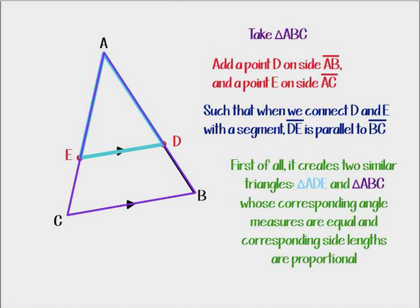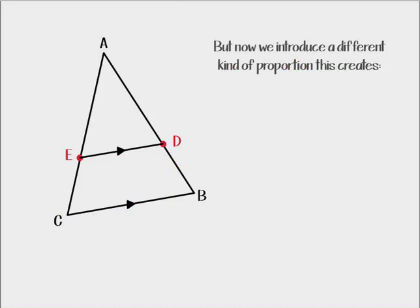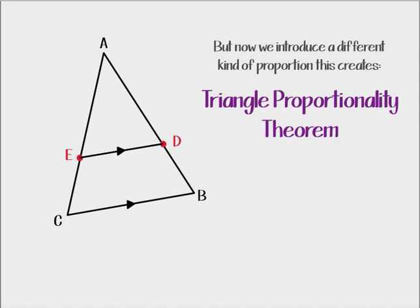That's kind of the background of what's happening with us here, but today we're going to set up a different kind of proportion that this also creates, and this is what the triangle proportionality theorem is all about. We're going to take those two smaller sections. Because these are similar triangles, I know that AE over AC is equal to AD over AB, which is also equal to DE over BC. But today we're going to use those smaller sections. I'm going to take AE and EC that were created when we put point E on that side and AD and DB that were created when we put point D on that side and put those into a proportion. So AE over EC is equal to AD over DB.